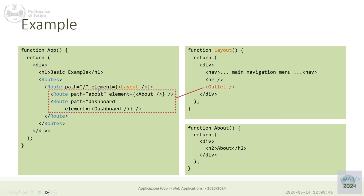Here we have an example of nested routes. On the left-hand side: we have one page that always shows a title no matter what the location is — it's outside the routes so it's always rendered. Then we have the routes that select one route out of two or three alternatives.